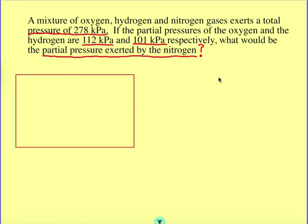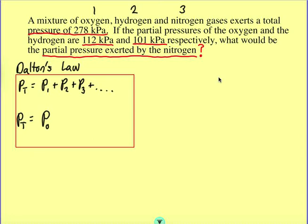It's talking about partial pressures and a mixture of gases. That tells us that it's a Dalton's Law problem. Dalton's Law states that P total is equal to the sum of all the gases that make it up. In this case, there's three gases: oxygen, hydrogen, and nitrogen. So the total pressure is going to equal the pressure of the oxygen gas plus the pressure of the hydrogen gas plus the pressure of the nitrogen gas.